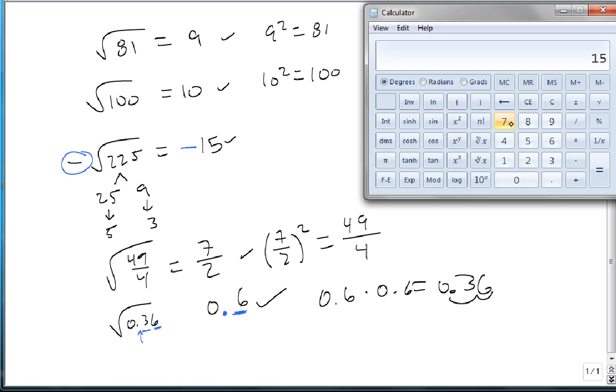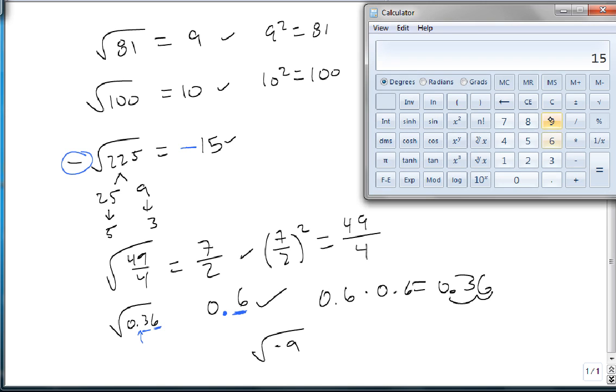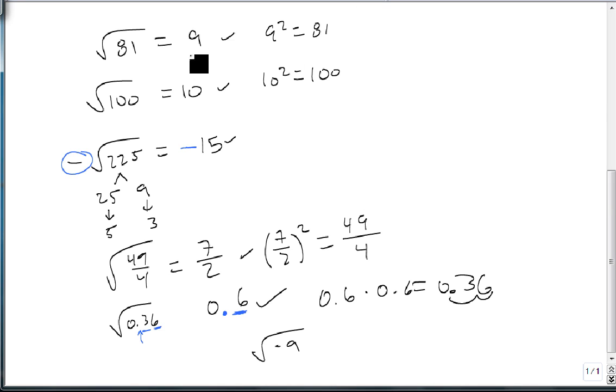One final thing. Notice what happens if I try and take the square root of negative 9 on the calculator. It says it's an invalid input. Remember that the result of a square has to be positive. It can't be negative. So if we have the square root of a negative number, then we will say, not a real number.